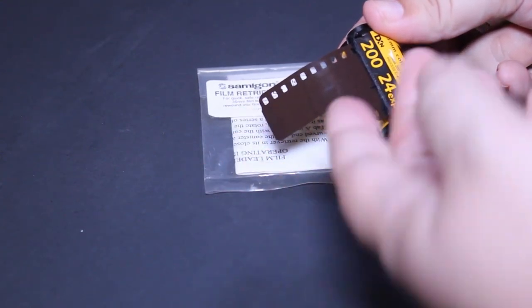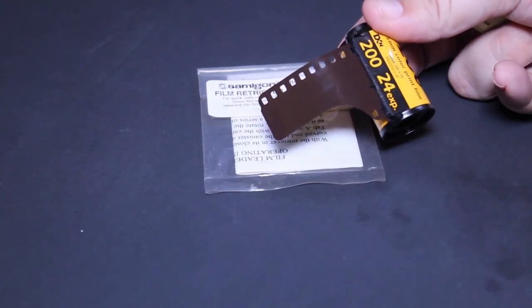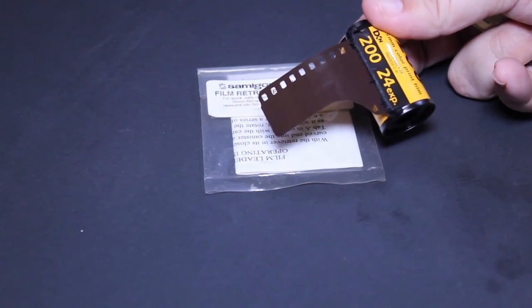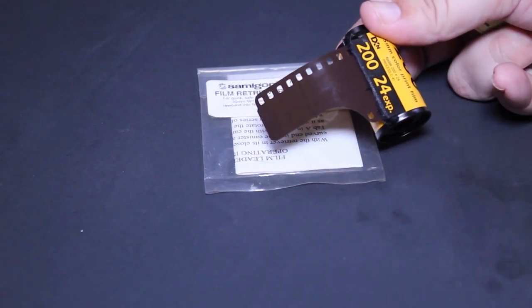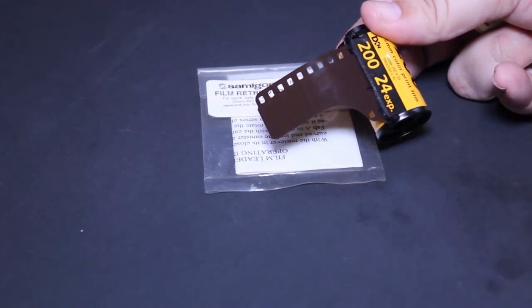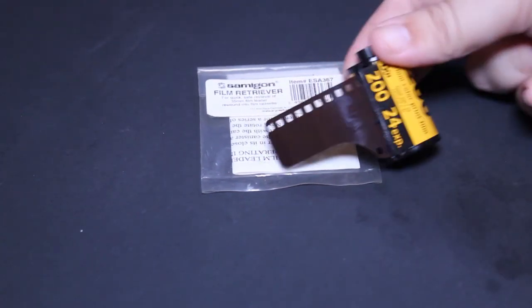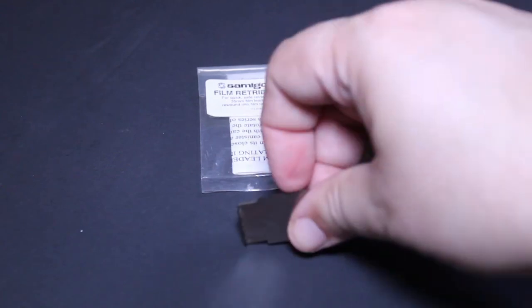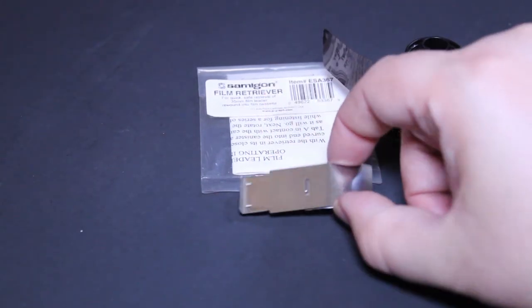Again, you want to be careful that you don't pull the film out too far, but you want it out enough so that when you take it into the dark room and develop it, you have enough to attach it to, to cut off the end, and to put it on your spool for developing.